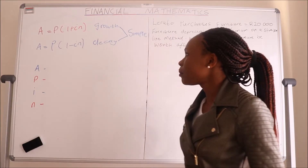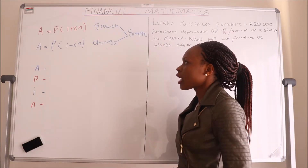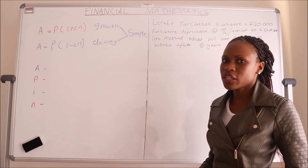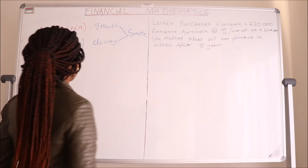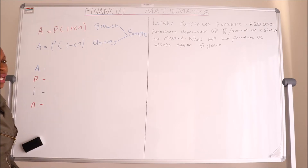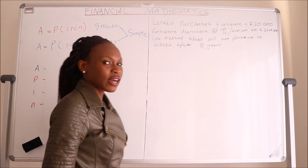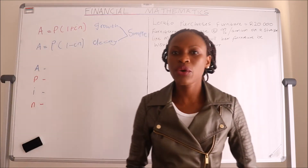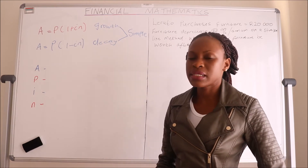In Financial Mathematics we have what we call simple growth and simple decay, and the difference between the two is the equations we use. For simple growth it's A equals P into (1 plus IN), and for simple decay it's A equals P into (1 minus IN). The difference between the two equations is that one has a plus and the other has a minus.